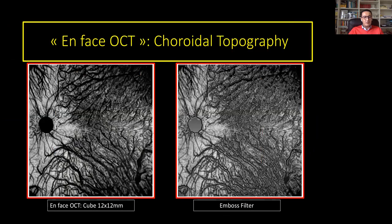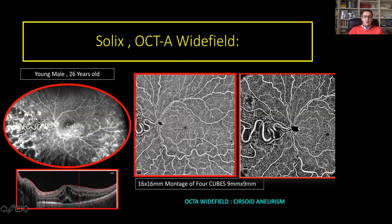EnFace OCT can be useful to analyze the choroid topography to see if there is a pachychoroid spectrum, and in the right position with the emboss withdrawal you enhance the choroidal vasculature. With the new Solix platform, you can have a montage of four 9x9 cubes to analyze the mid-periphery. In this case of OCTA showing a circoid aneurysm in a wide-field angiography, you can see here the complication with the ischemic area and macular edema.